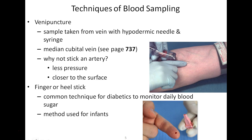The median cubital vein is a handy candidate for extracting blood. One might ask why not stick an artery — veins are under less pressure than arteries, and arteries are more deep. Veins are closer to the surface, hence they make better candidates for venipuncture.